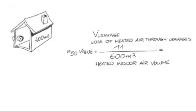1,100 cubic meters per hour divided by 600 cubic meters results in a value of about 1.85. The air in the building has been changed 1.85 times per hour.